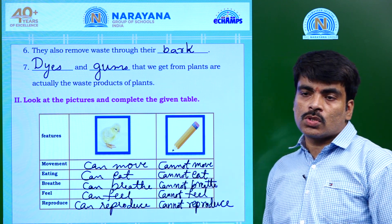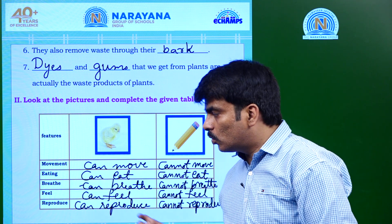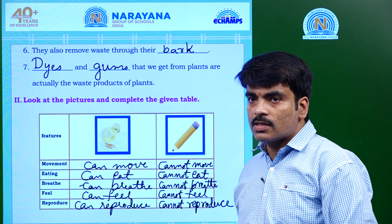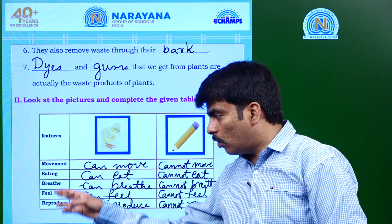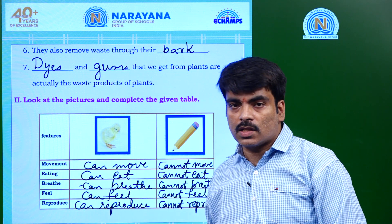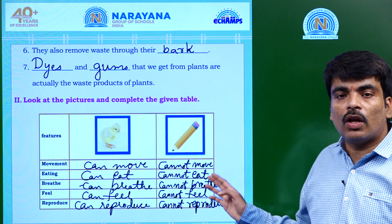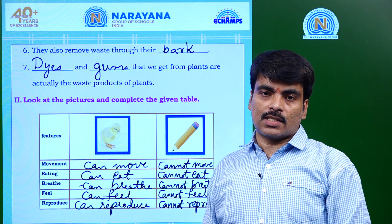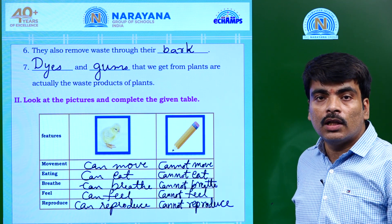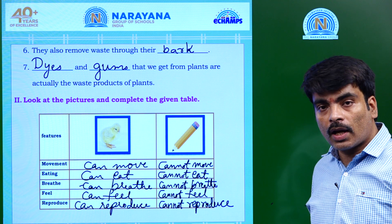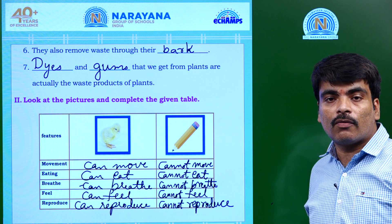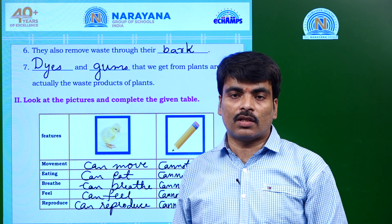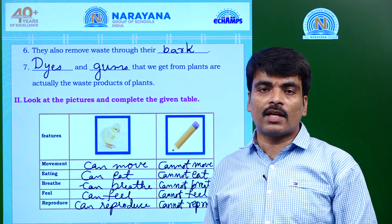By observing these two things and their differences, what we can see is that living things have all these features, whereas non-living things will not have any of these features. Hope you have understood the concept very well and can identify the differences between living things and non-living things. Thank you and have a nice day.